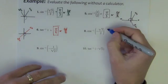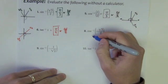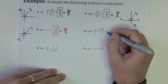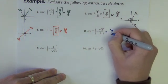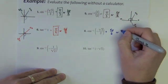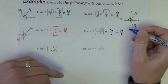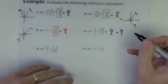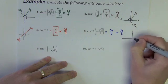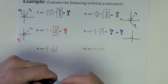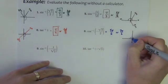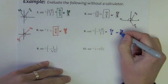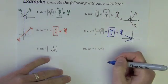Cosine inverse of negative square root of 3 over 2. Cosine is the x values, so where do we have x values of negative square root of 3 over 2? It could be at 5 pi over 6 or 7 pi over 6. Inverse cosine is stuff on top — we need to be from 0 to pi. 5 pi over 6 is here; 7 pi over 6 is down there and not in the top half. So our answer is 5 pi over 6.